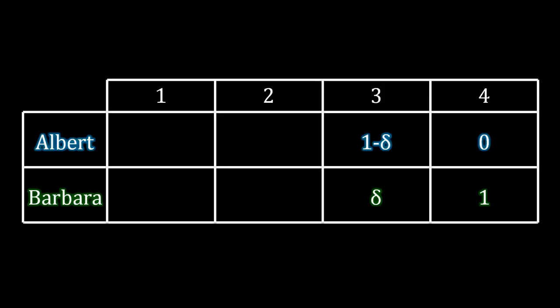Barbara is willing to accept any offer in the third period which is an offer of a split of delta and one minus delta. Why is that the case? If Barbara rejects a value of delta in the third stage, then she suffers a period of delay and gets to take the entire pie in the fourth stage, which is reduced between periods three and four by a value of delta. Obviously, Albert is going to want to offer the minimum amount he needs to to get Barbara to accept. That value is going to be delta, and Albert will take the remainder, which is one minus delta.